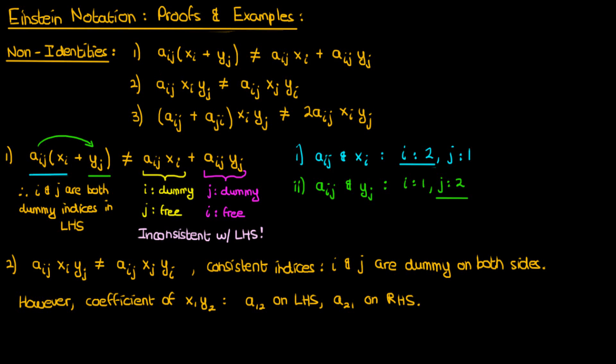If you still aren't convinced by this reasoning, I encourage you to write out all the terms on both sides by supposing that i and j run from 1 to 3 and then show that the two sides of the non-identity are not the same.